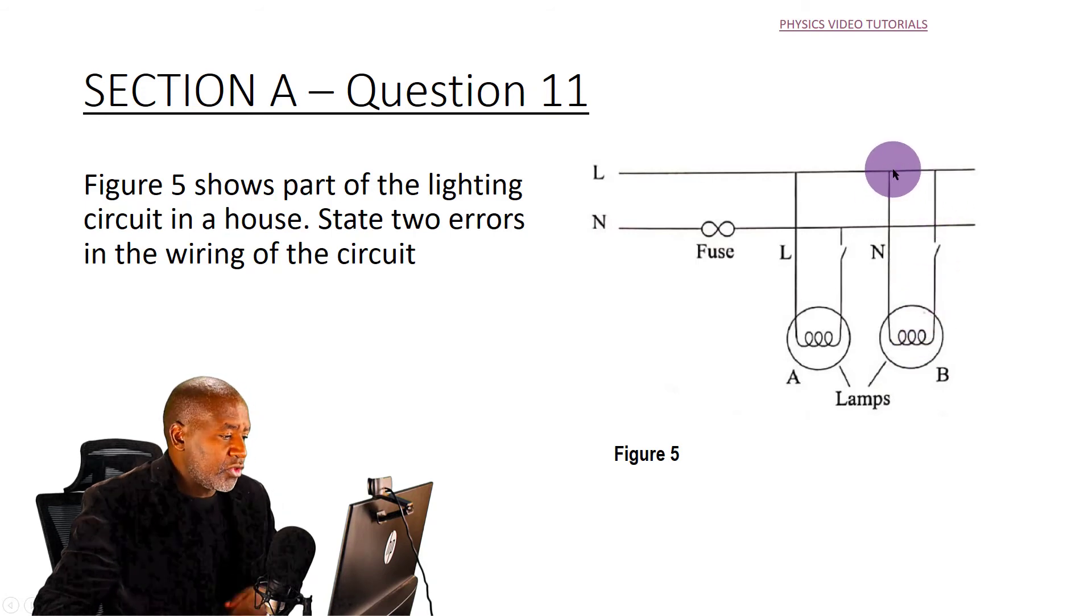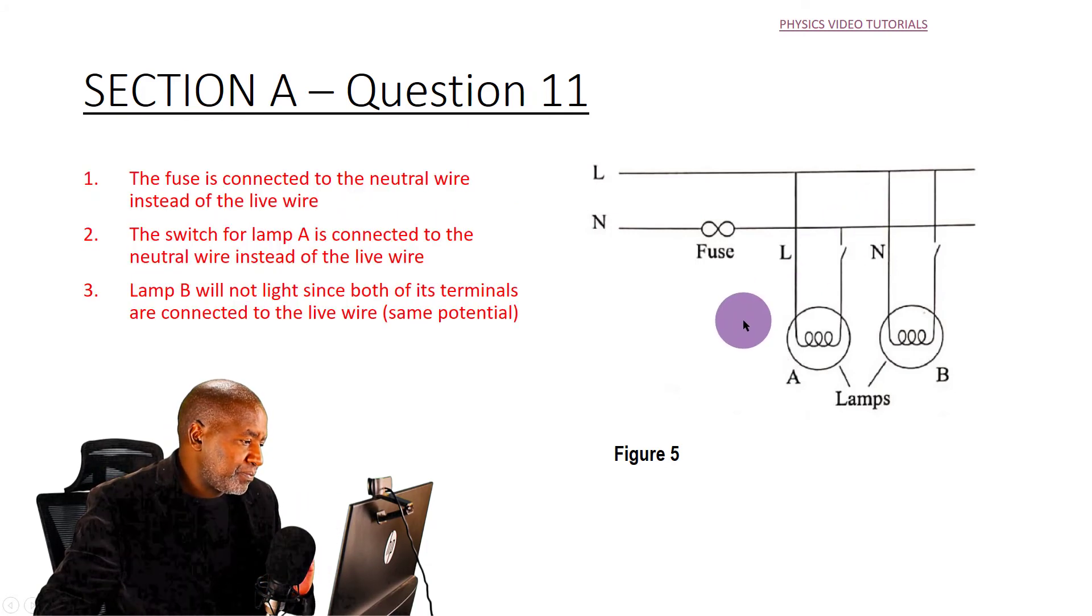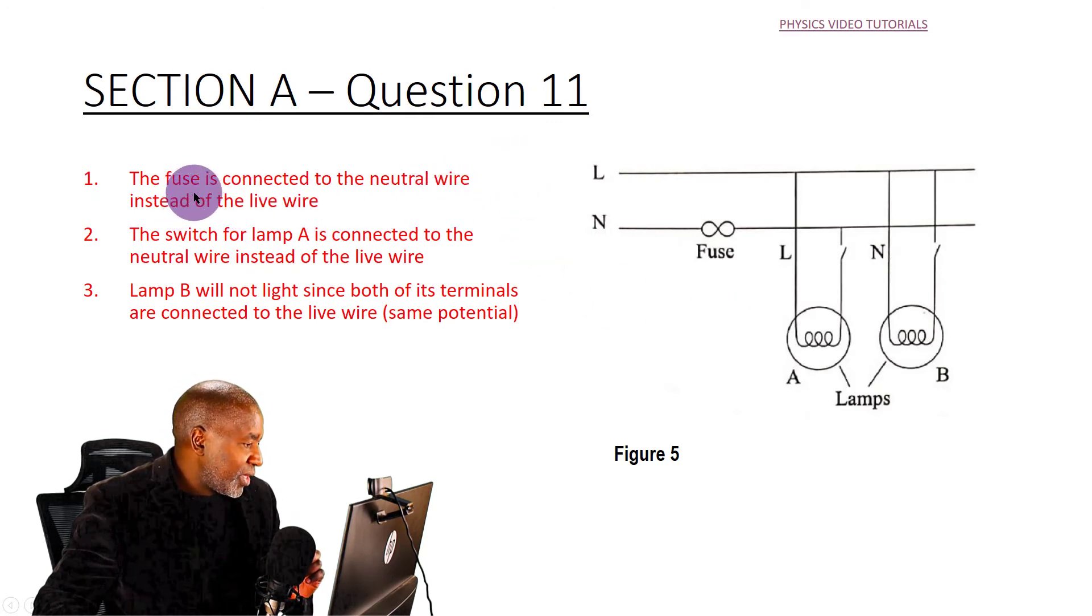So those are the three errors actually, but remember, only two were required. Number one: the fuse is connected to the neutral wire instead of the live wire. Number two: the switch for lamp A is connected to the neutral wire instead of the live wire.